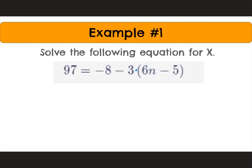You actually could work backwards without distributing, but we can talk about that later. A lot of students are going to prefer to distribute first. So distribute that negative 3 into the parentheses. We'll end up with 97 is equal to negative 8 minus 18n plus 15. Now we'll combine like terms. We'll have 97 is equal to negative 18n plus 7.